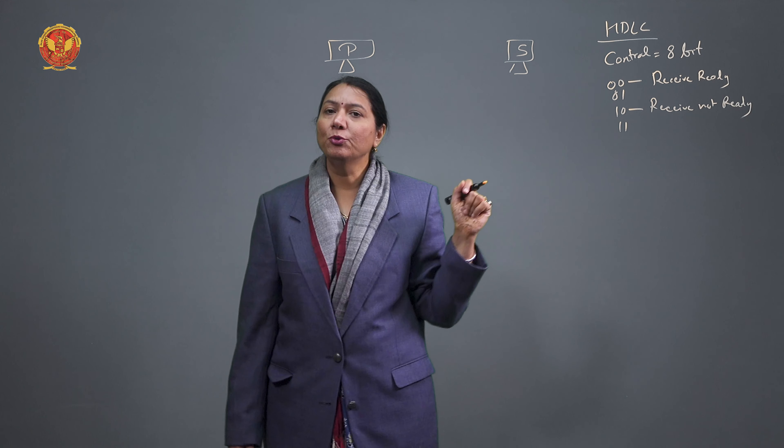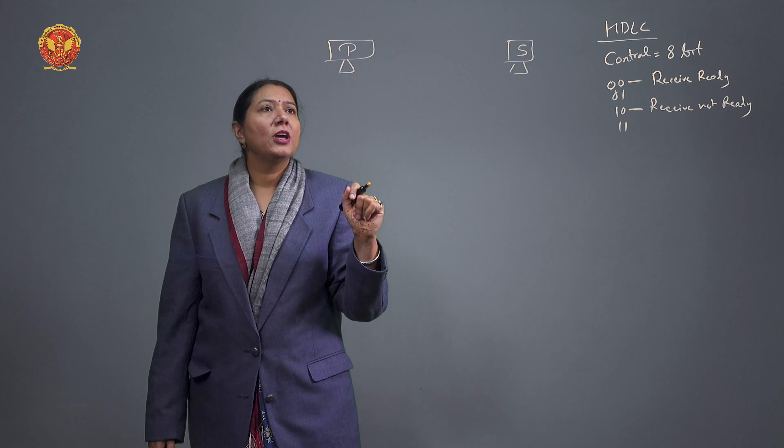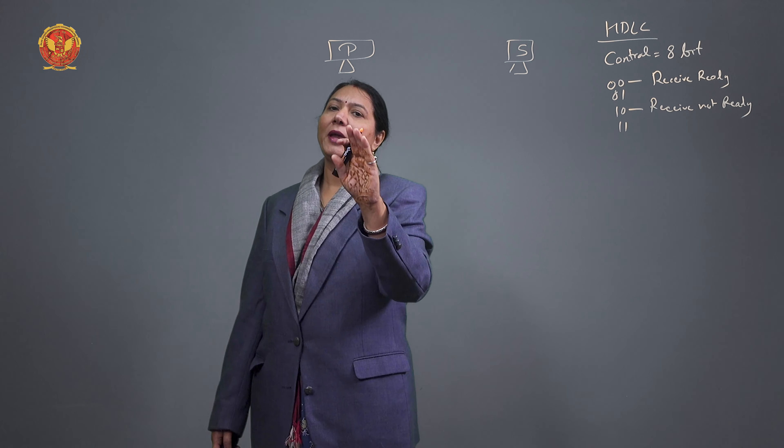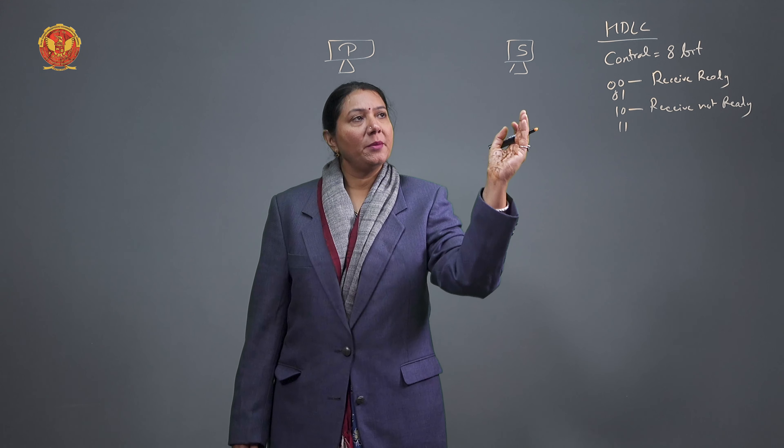As we know, HDLC is a bit-oriented protocol which has three basic frames: I-Frame, which is the information frame used for data or information; S-Frame, the supervisory frame; and U-Frame, the unnumbered frame.